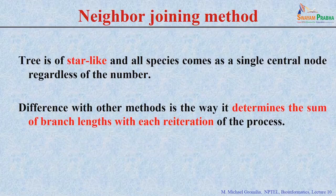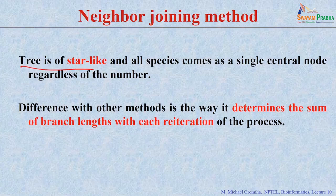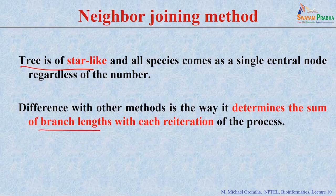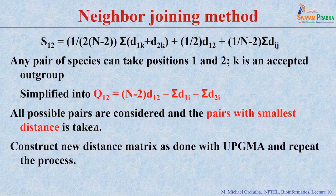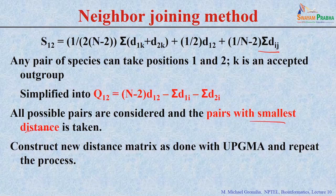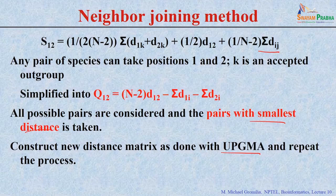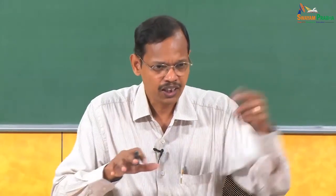There is another method called the neighbor joining method. Instead of merging one by one, it starts with a star-like tree where each species is connected centrally. It considers the sum of branch lengths with each iteration and finds which pair has the closest distance overall — using information from all species simultaneously rather than doing it one by one.